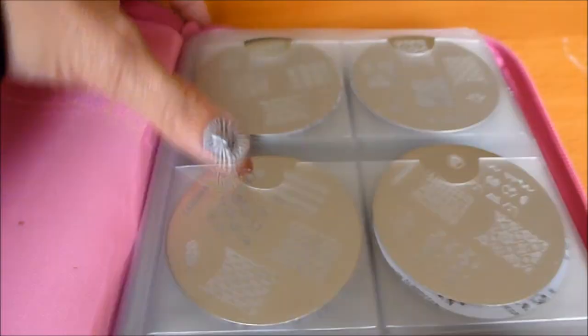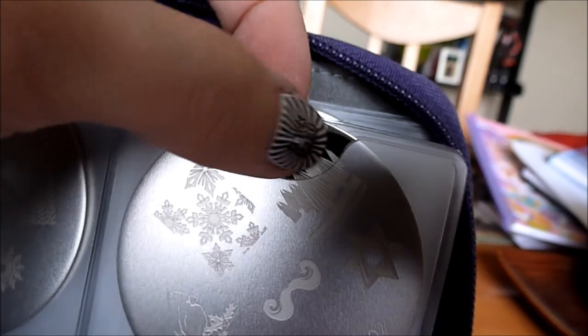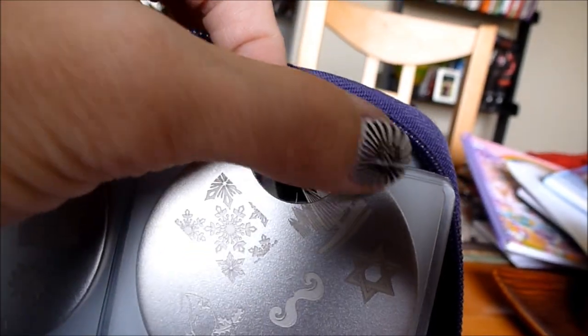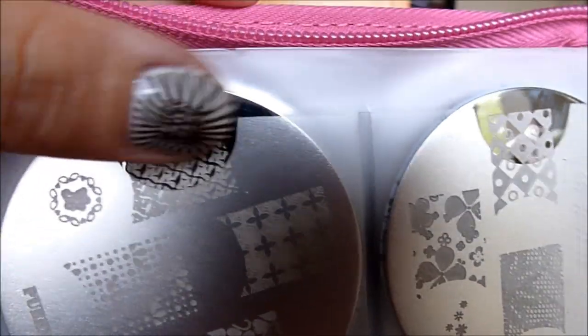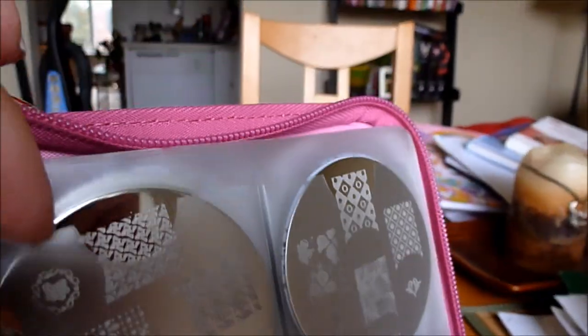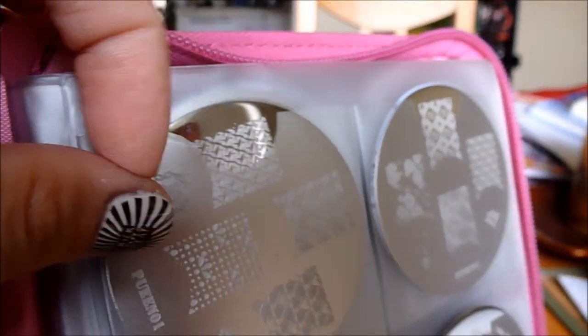If you look at these ones compared to the pages compared to Bundle Monster, Bundle Monster has a rounded edge here and the Queen one doesn't. I feel like that could maybe make it more prone to rip or something. It is still good quality though.